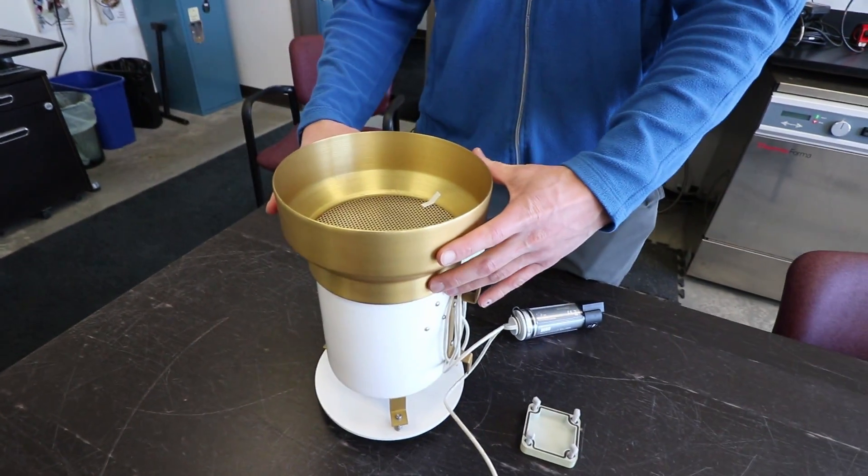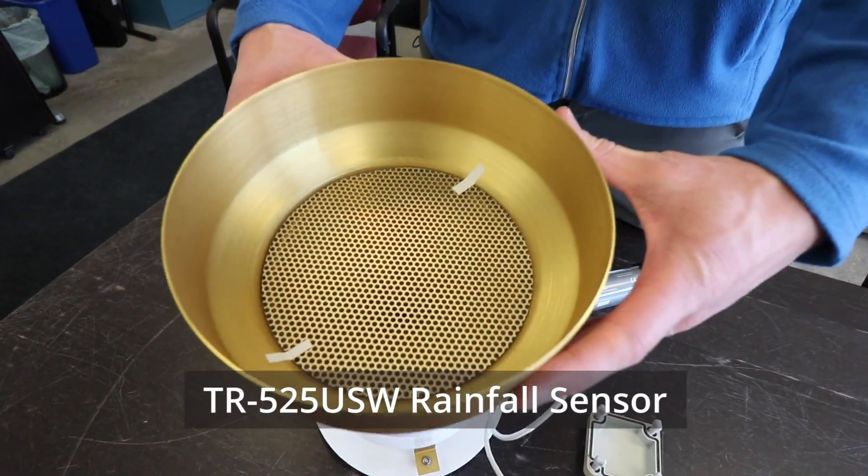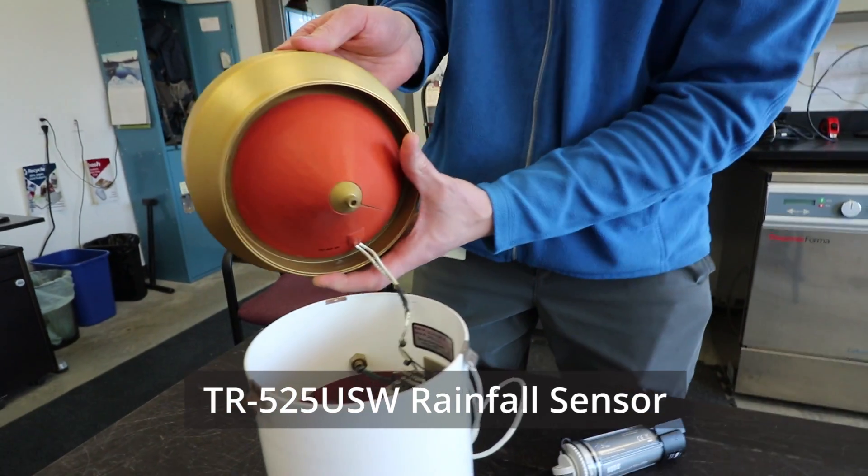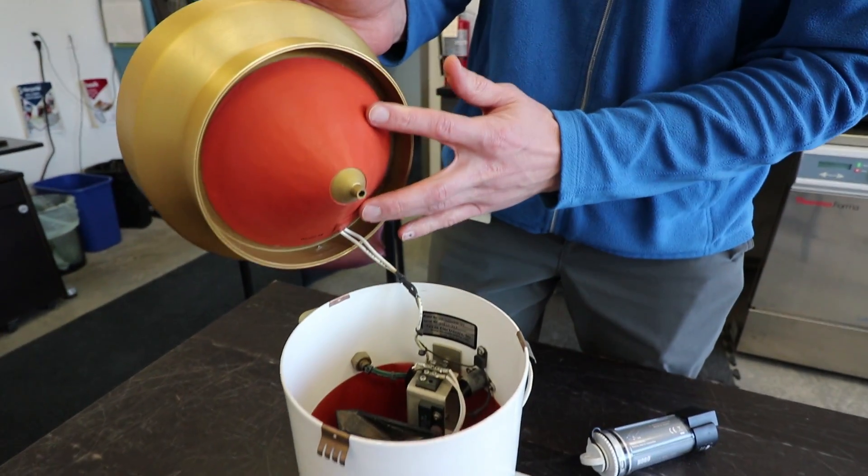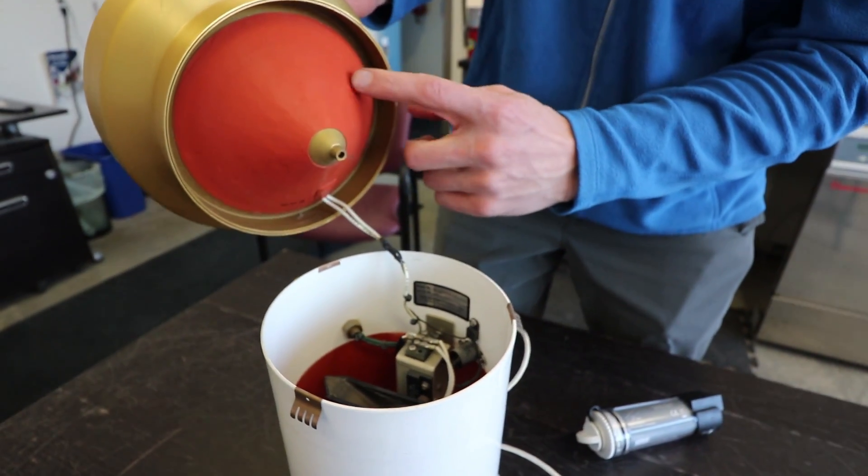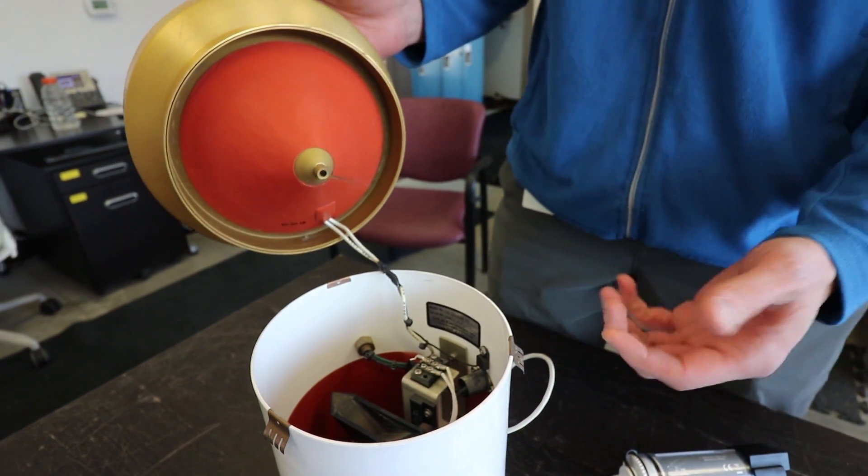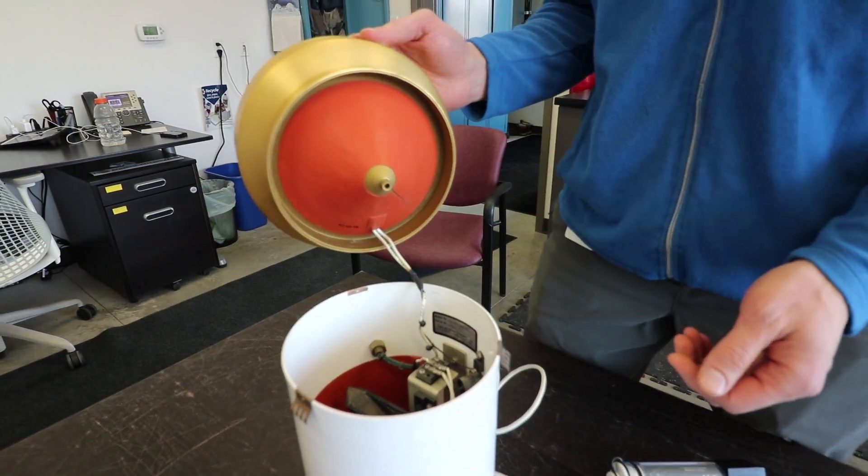The top part is the funnel with a screen. Below that you can see where the funnel comes down and one of the heating elements that makes it a heated tipping bucket rain gauge.